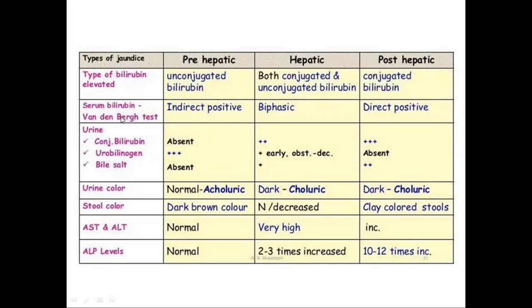The Van den Bergh test is used to determine the level of bilirubin — either conjugated or unconjugated — in the serum. If conjugated bilirubin is present, it will give a purple color within 30 seconds. If unconjugated bilirubin is present in the serum, it will give a purple color after 30 minutes by the addition of alcohol. The reagent used for this test is the diazo reagent, which consists of sulfanilic acid plus HCl plus sodium nitrite. So conjugated bilirubin gives purple color within 30 seconds, while unconjugated gives purple color after 30 seconds but only after the addition of alcohol.